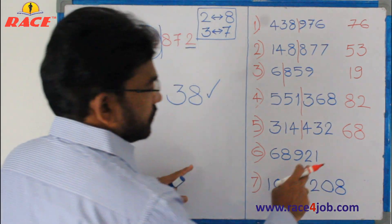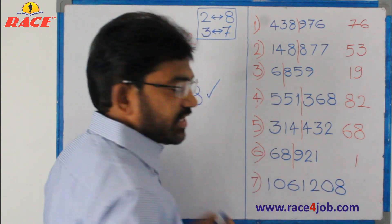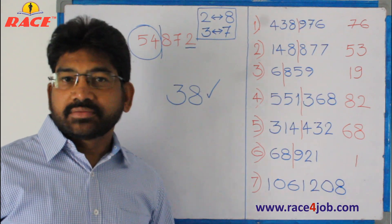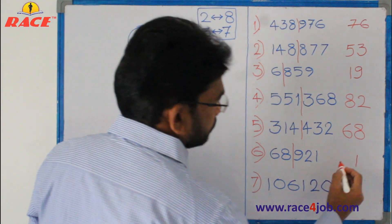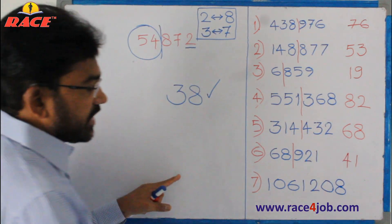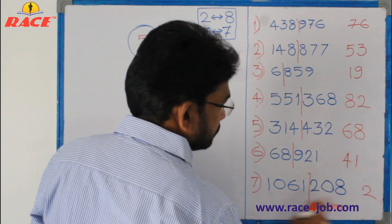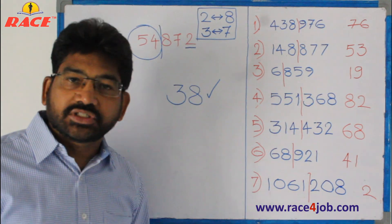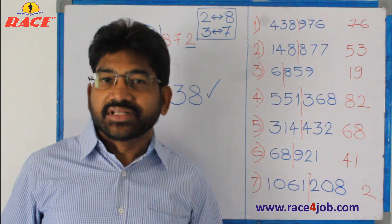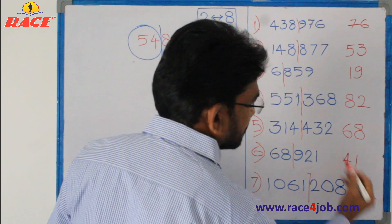Next one: divide here — right side ends with eight, so eight means two comes. The left side part is 1061. 1061 is between ten cube (1000) and eleven cube (1331). The smaller is ten. So 102 is our answer.